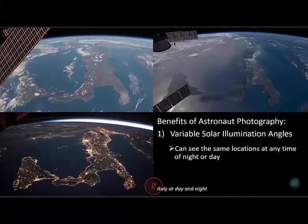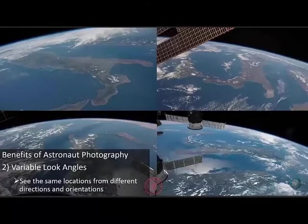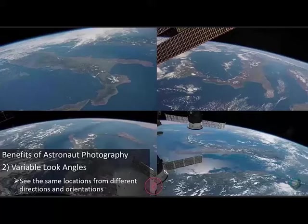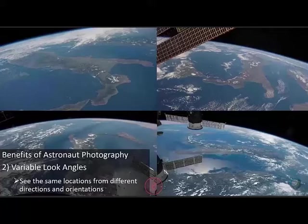Another benefit from the ISS is being able to look at the same target from a variety of angles. These four pictures of Italy show it from all sorts of different angles, with Earth's horizon — what we call Earth's limb — visible in the background. An advantage of looking at the same target from different angles is that you can sometimes see different amounts of depth in the landscape, or sun glint off the Mediterranean Sea, and different look angles can be used to create 3D renderings through photogrammetry of certain areas.